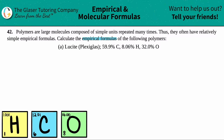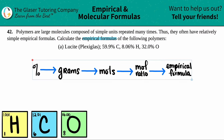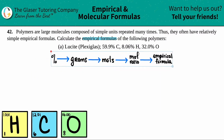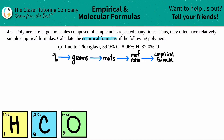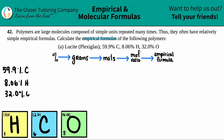There's a four-step process. The first thing I'm going to do is list out the three elements that we have here. I have 59.9% carbon, 8.06% hydrogen, and 32.0% oxygen.